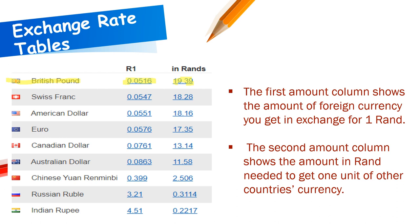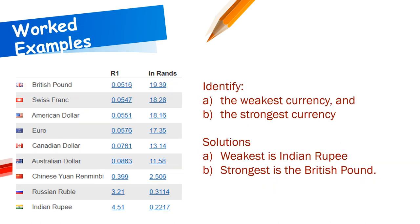To summarize: the first column shows the amount of foreign currency you get in exchange for one rand (e.g., 0.0516 pounds per rand), and the second column shows the amount in rand needed to get one unit of the other currency (e.g., 19.39 rand per pound). Now let's go through word examples — the first says: identify the weakest and strongest currency.